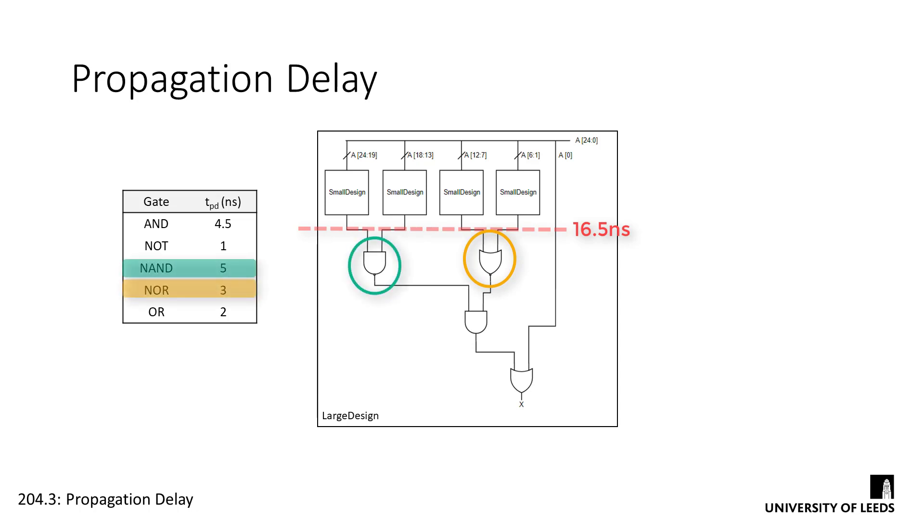Looking at our table, we can see that the NAND has a higher delay, 5 ns, and therefore these branches are part of our critical path, which, if we add up the delays of the gates and the delay of the small design circuit, comes to 28 ns.